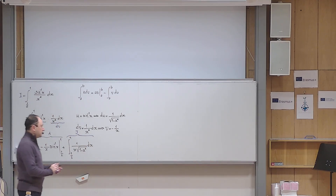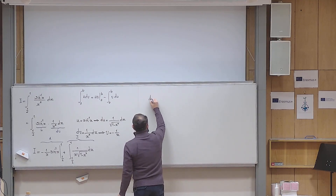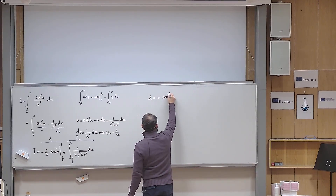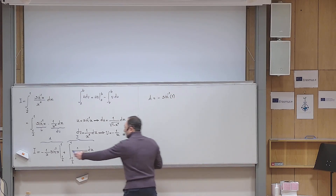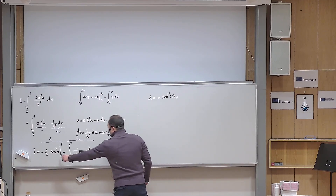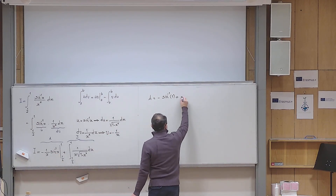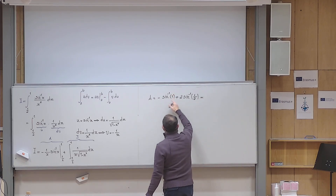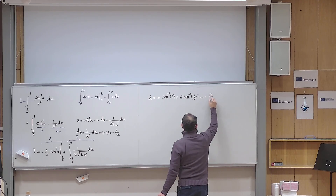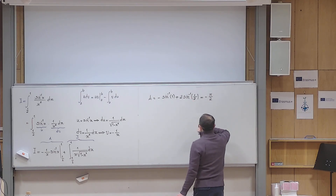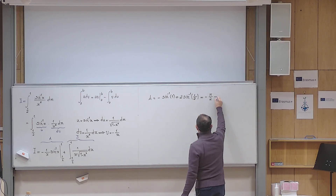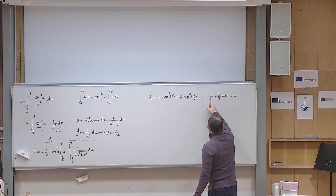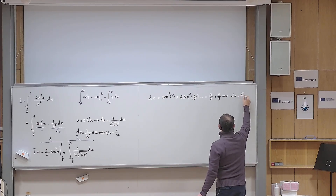Let us calculate A first. A equals the expression minus (1/x) times sine inverse x evaluated from 1/2 to 1. Plugging in the upper limit gives minus sine inverse of 1, and subtracting the lower limit gives plus 2 times sine inverse of 1/2. Since sine inverse of 1 is pi/2 and sine inverse of 1/2 is pi/6, this becomes minus pi/2 plus pi/3, which equals negative pi/6.